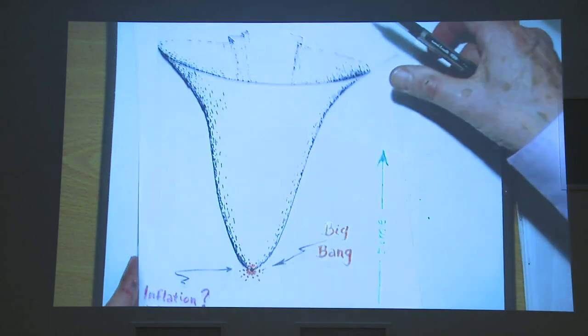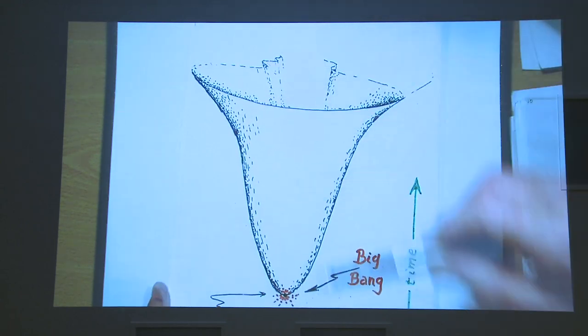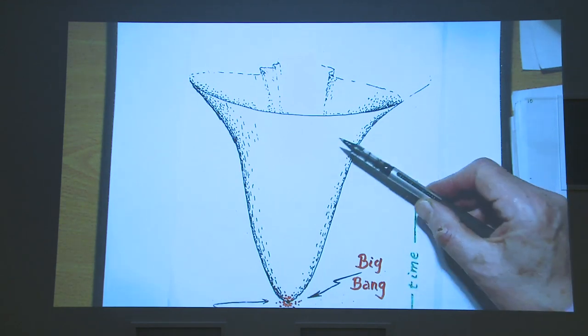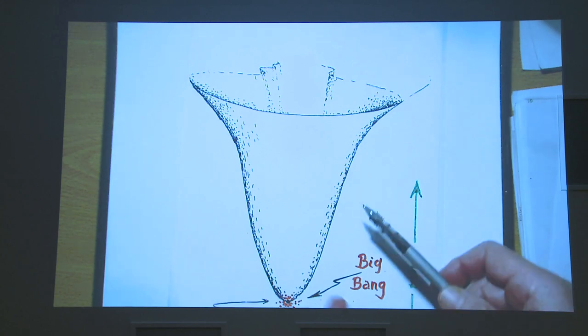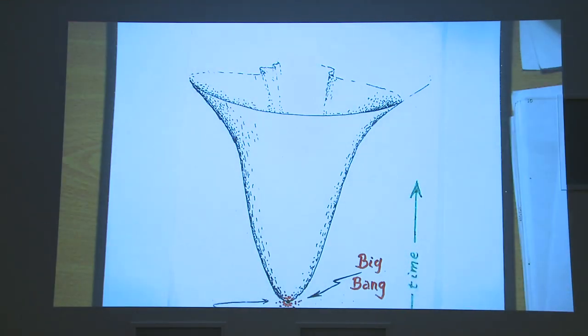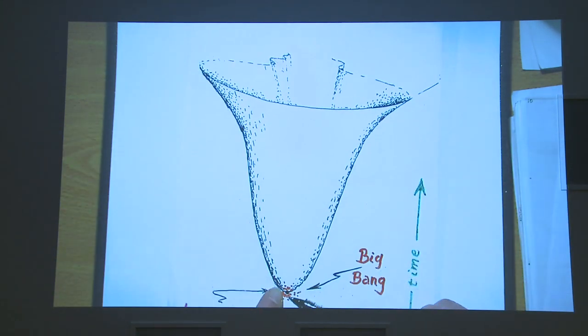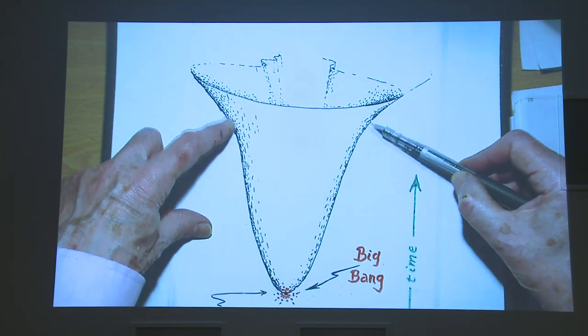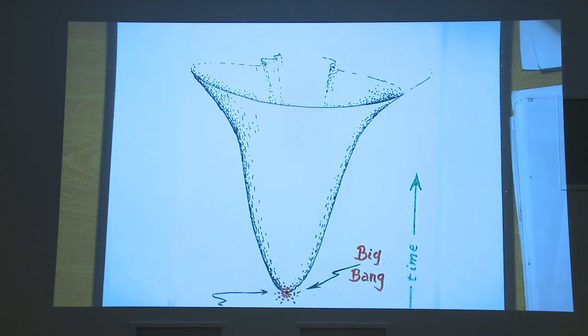What we seem to have is one of those models—a generic picture of the universe. It's generic because I'm not bothered about whether it's open or closed. What I require is that it has a Big Bang at the beginning, expands, and then starts to accelerate. We're somewhere around here where this accelerated expansion is beginning to make itself known.